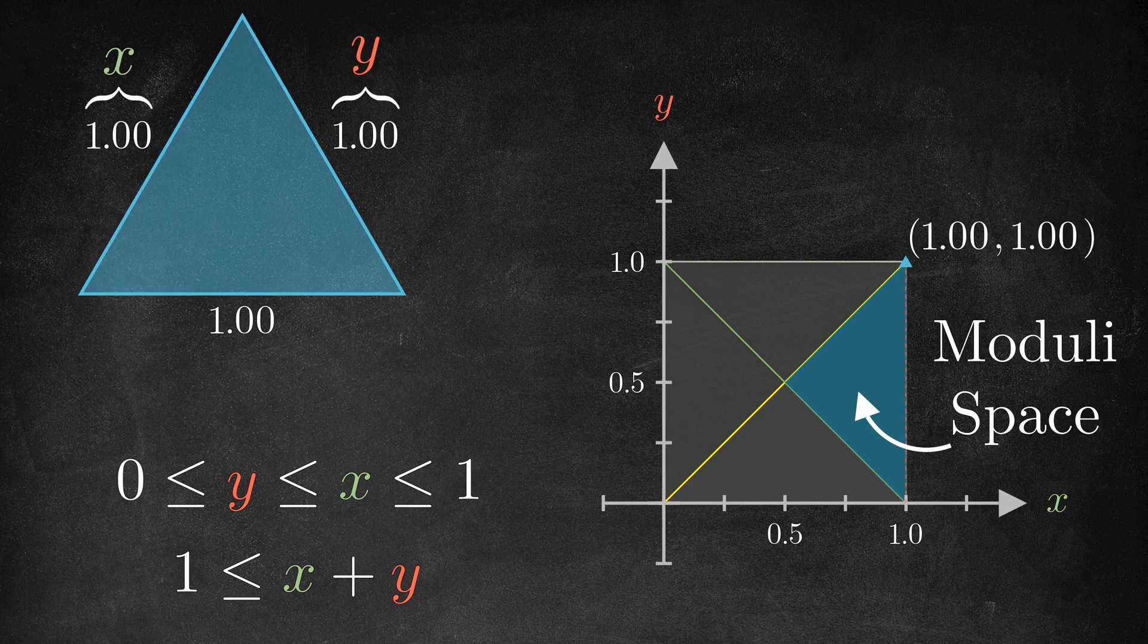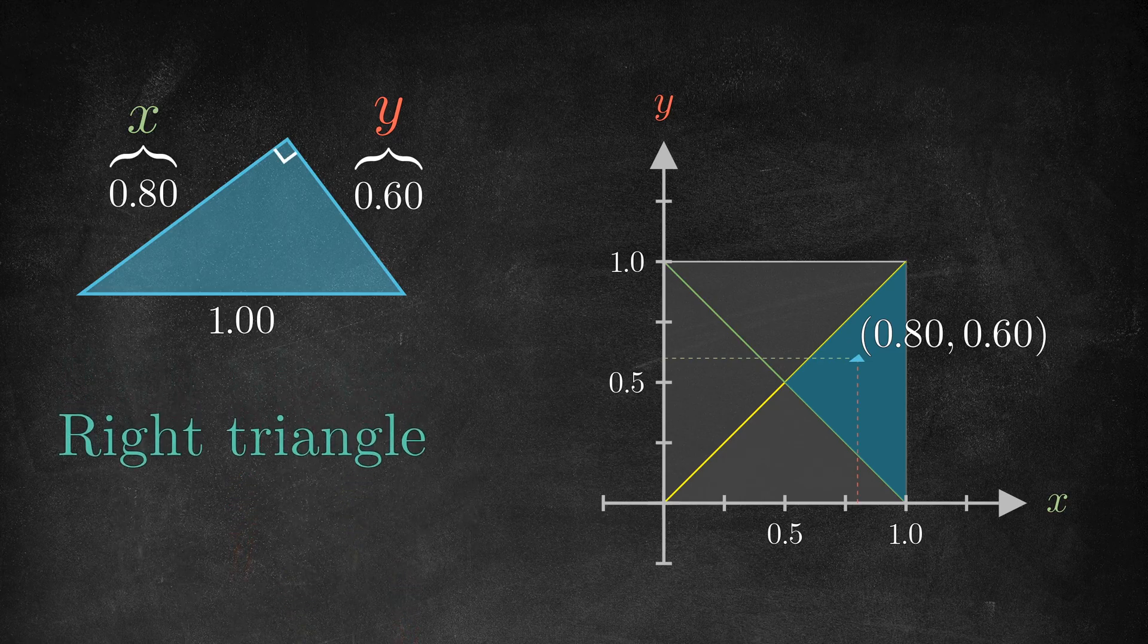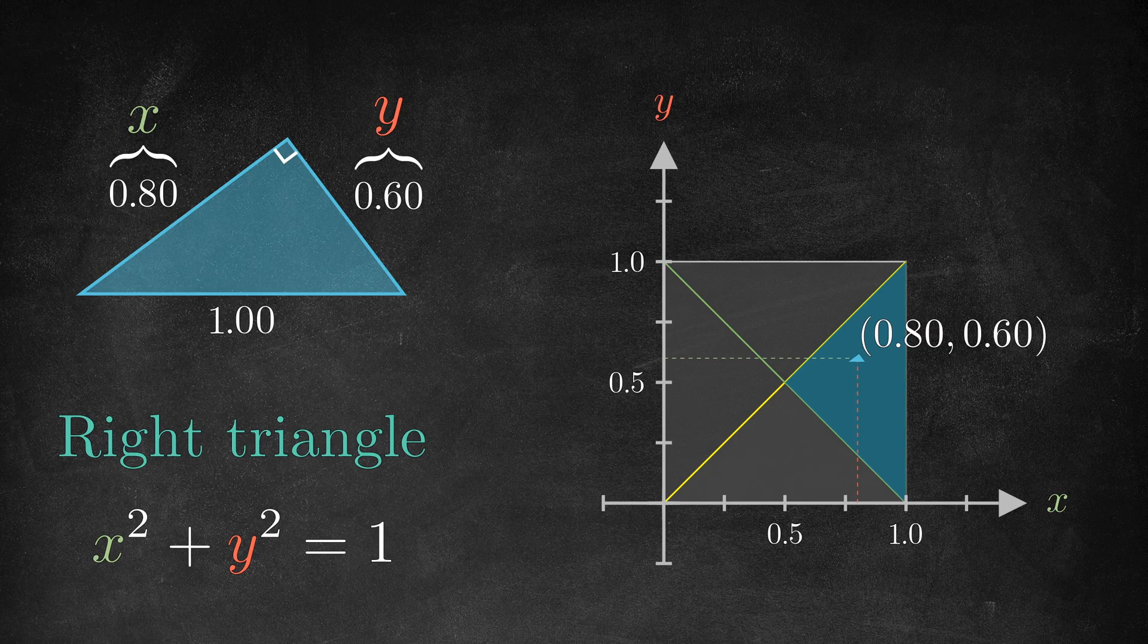The value is that it gives an alternate way to think about various types of triangles. If it's a right triangle, for example, the Pythagorean theorem tells us that x squared plus y squared equals 1, which in our picture means that it lives somewhere on this circular arc with a radius of 1.